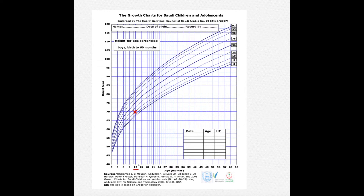Now let's say we have another child — the blue one — also one year old, but plotted higher up here. And we have a third child — the green one — whose height is around 60, plotted lower. They are all the same age, all one year old, but they are displayed in different positions on the chart.